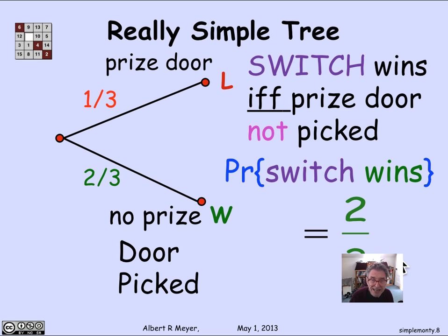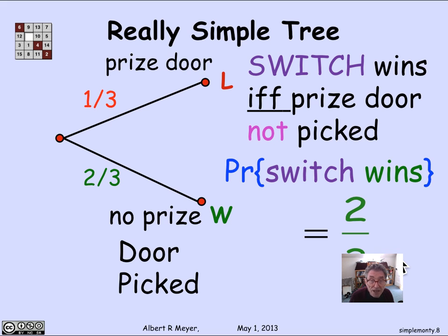The message here is that the tree you come up with to model the experimental outcomes is really a modeling process, and there may be many models that work to capture a given scenario. It will often pay off to try to find a simpler tree to make the analysis simpler.